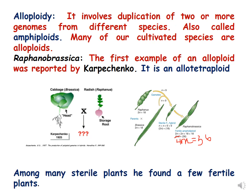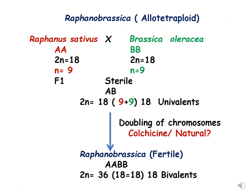Raphanobrassica was the first example of an alloploid reported by Karpechenko. Although the results were not as per his expectations, this plant was fertile. Raphanus sativus has 18 chromosomes — let us designate its genome as AA — and Brassica oleracea is designated BB, also with 18 chromosomes. In the sterile plant, the A genome comes from Raphanus and the B genome from Brassica oleracea, giving 9 chromosomes from each, 18 total, all in univalent form. Doubling of chromosomes took place, probably by natural means and later by colchicine, forming Raphanobrassica — a fertile tetraploid with 18 bivalents, designated as 2n = 4x = 36, genome AABB.